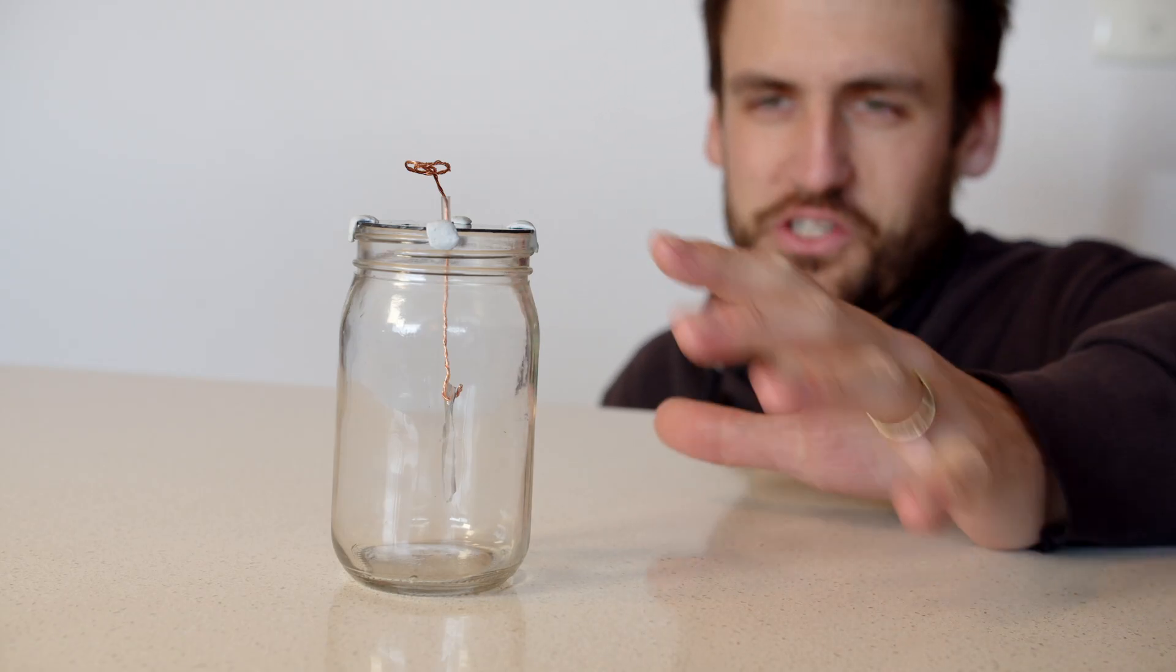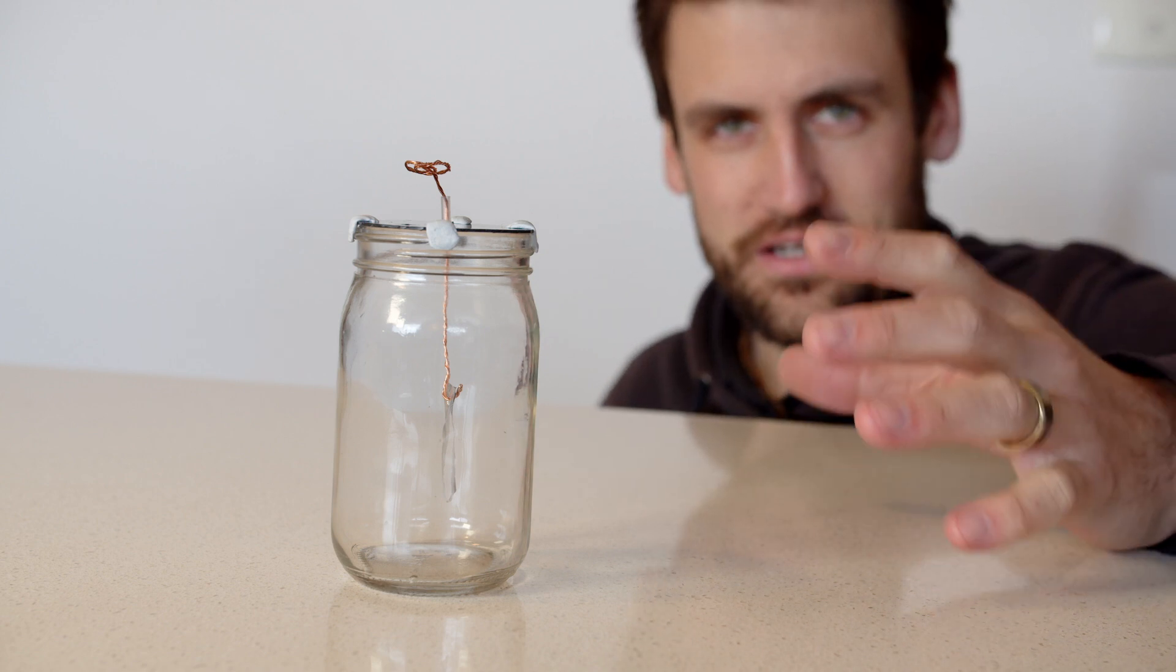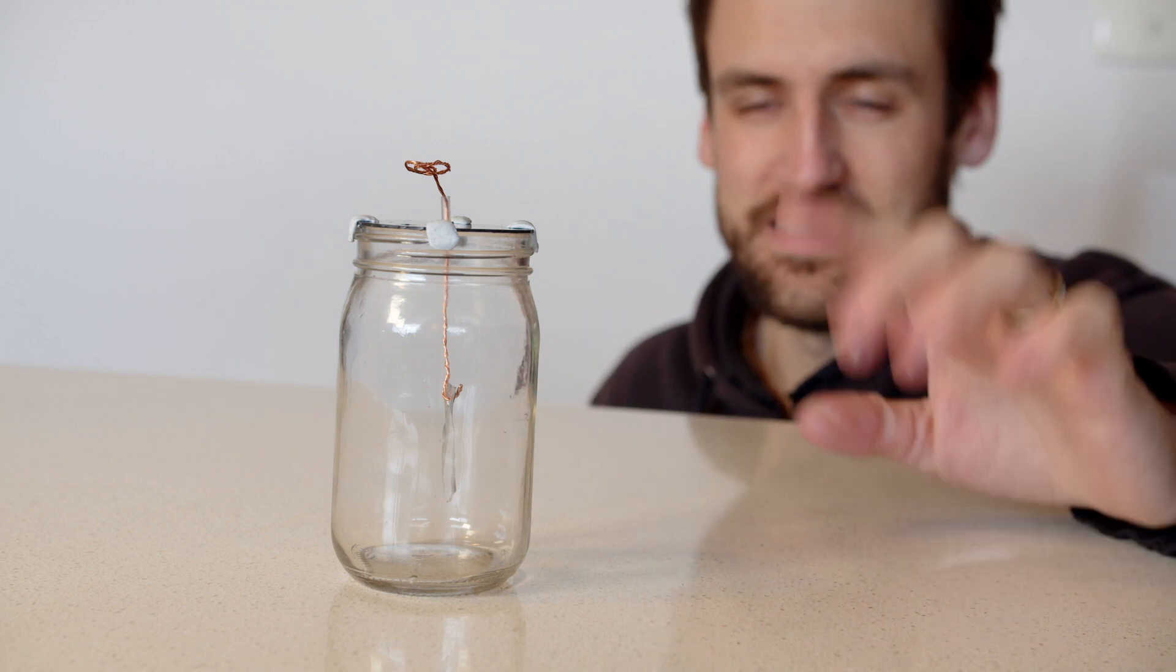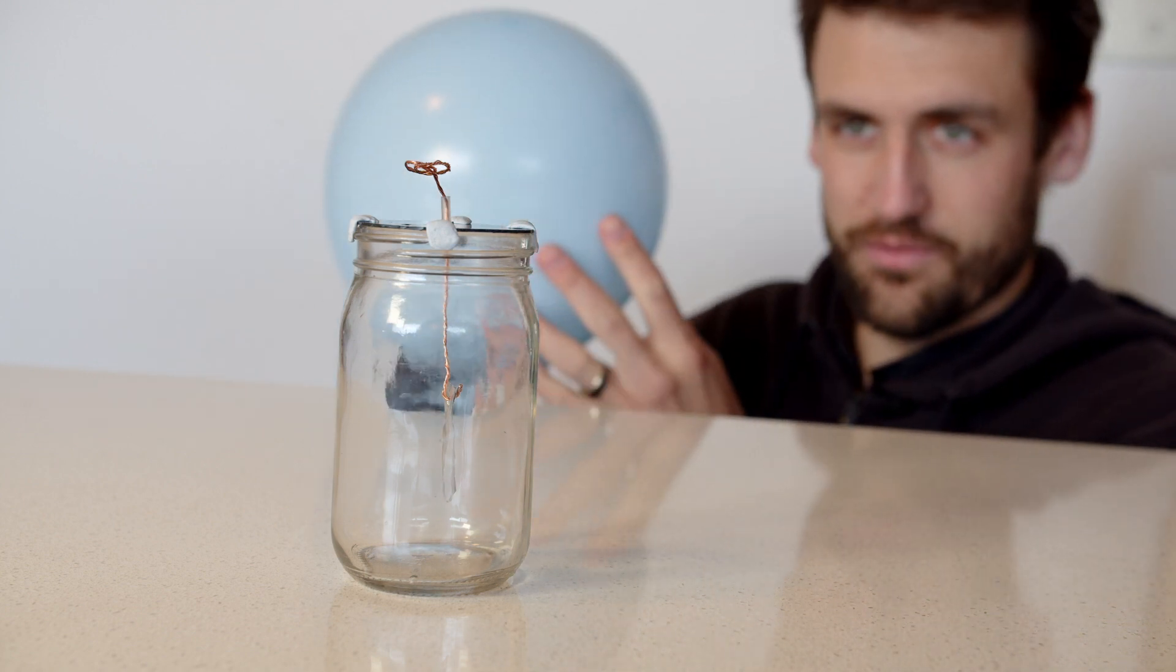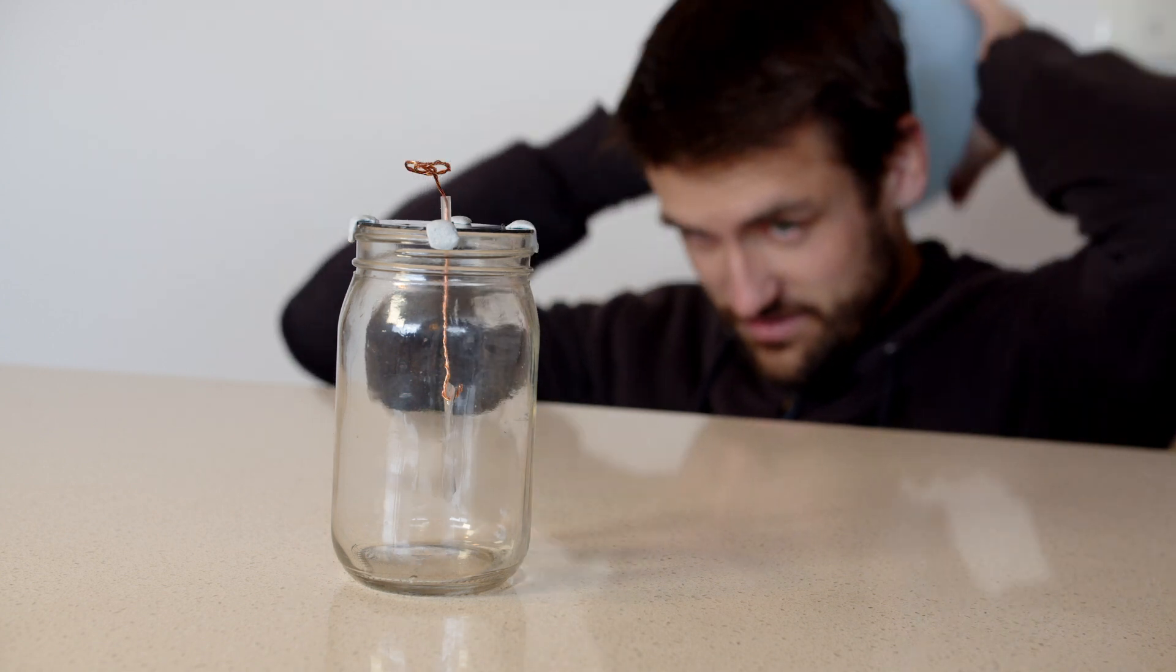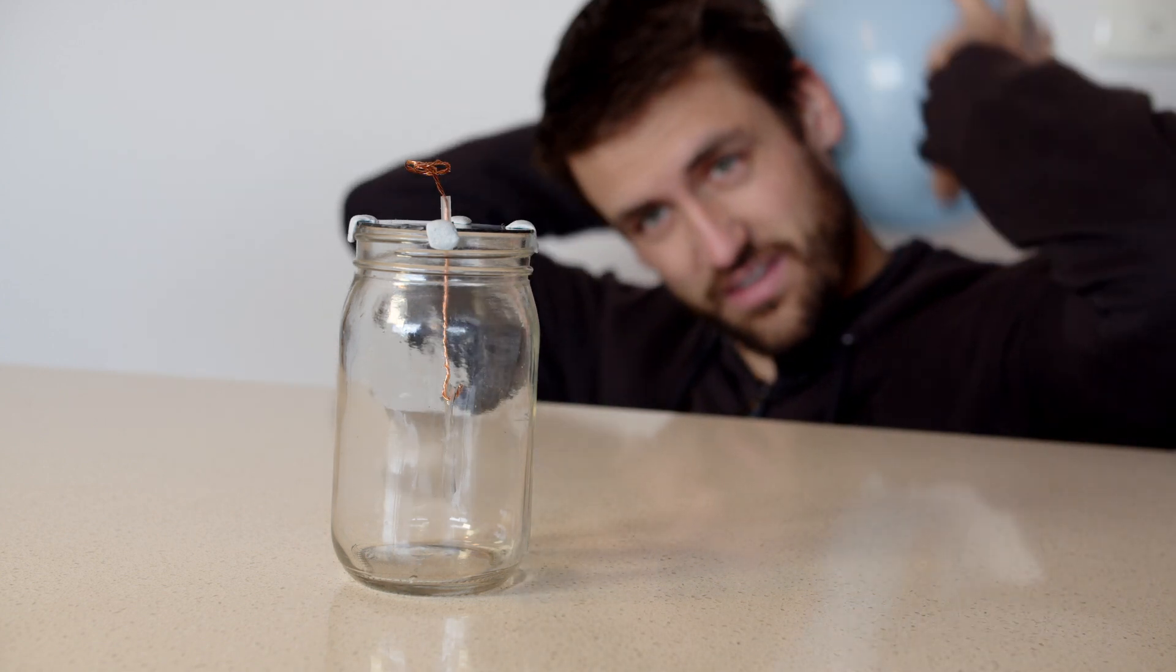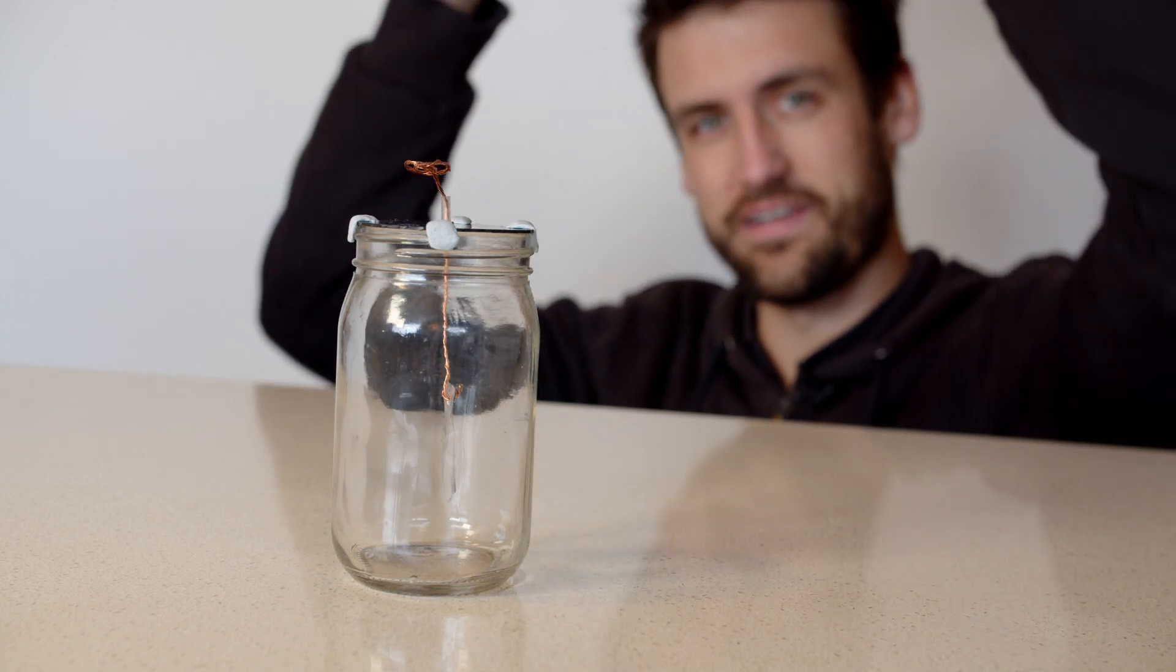Now the fun part: showing you what it does. It's called an electroscope and it detects the presence of an electric charge in an object. I have here a balloon. I'm going to rub it on my head—a classic way to get static electricity.